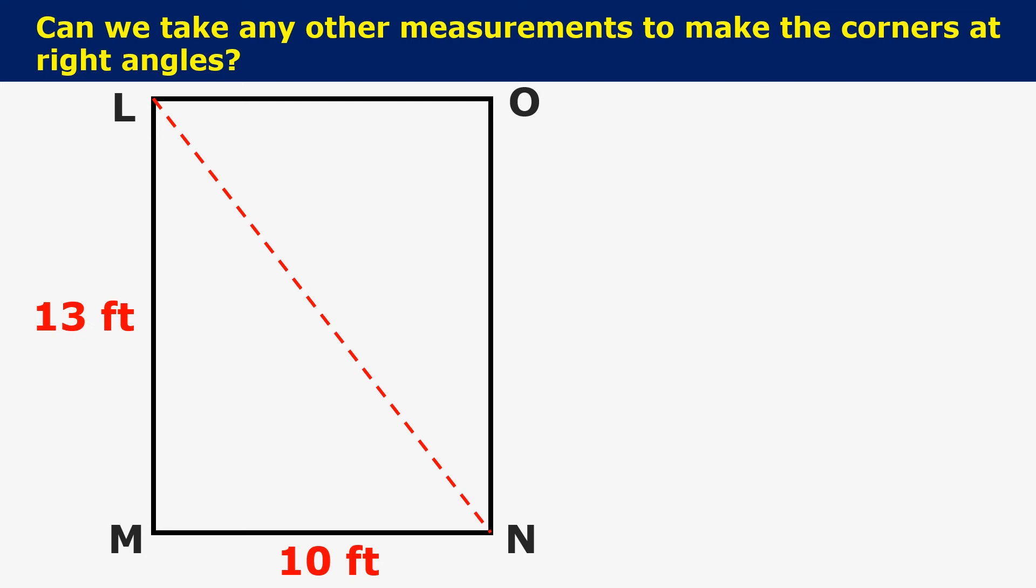Can we take any other measurements to make the corners at right angle? And the answer is yes. As you can observe in the drawing, the two sides of the building are 10 feet and 13 feet in length. Here you have to calculate the hypotenuse for any convenient length you have taken by calculating the diagonal of the building LMNO. You can fix all the corners at right angles easily.